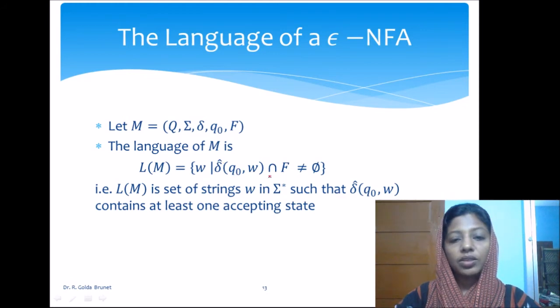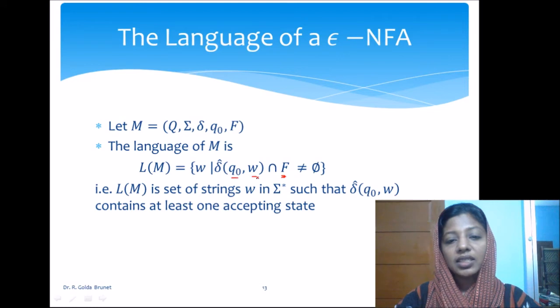should have a state in the final state of the machine. That is, delta cap, when we start from the starting state and accept the string w, will be ending with some states, a set of states. And that set of states intersection with the set of final states should not be equal to null. That is,